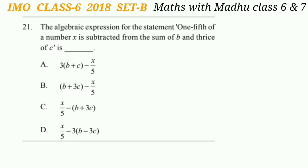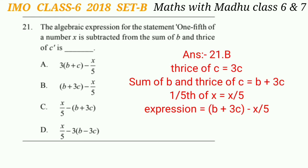Question 21: Find the algebraic expression for the statement 'one-fifth of a number x is subtracted from the sum of b and thrice of c.' Thrice of c is 3c. Sum of b and 3c is b + 3c. One-fifth of x is x/5. So the expression is b + 3c - x/5. The answer is option B.